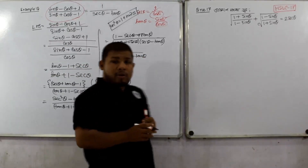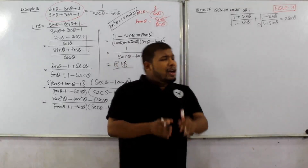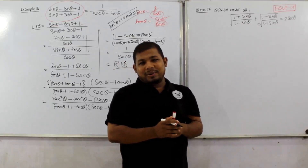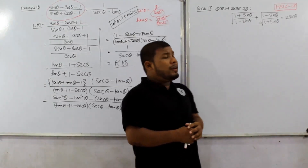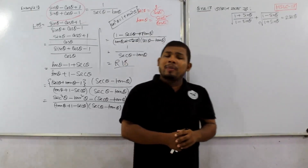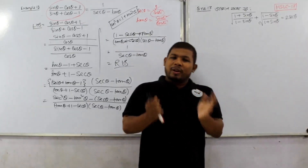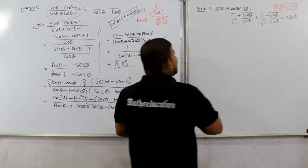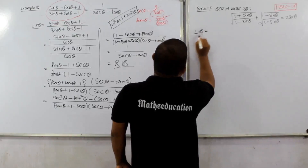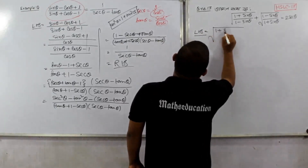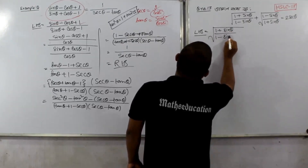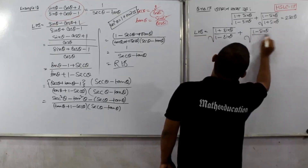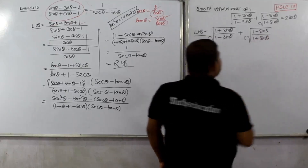That completes question 17. Now moving to the next question, question 17 of the home meeting. The question is: root over 1 plus sine theta divided by 1 minus sine theta, plus root over 1 minus sine theta divided by 1 plus sine theta, equals twice sec theta. We will show the left-hand side equals the right-hand side.